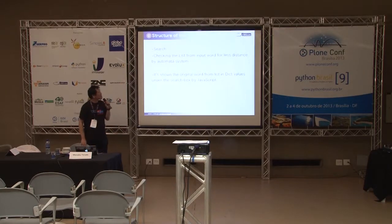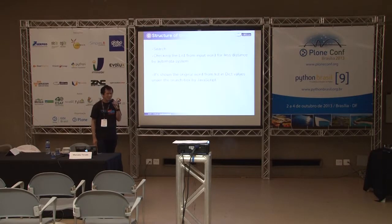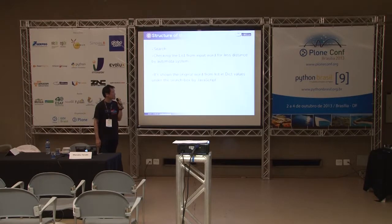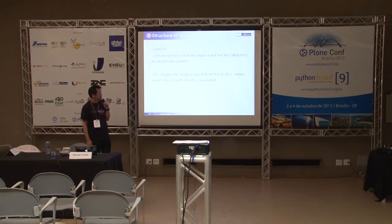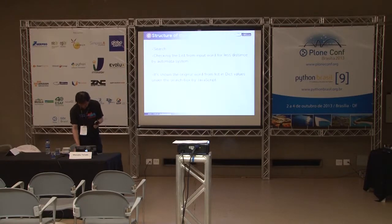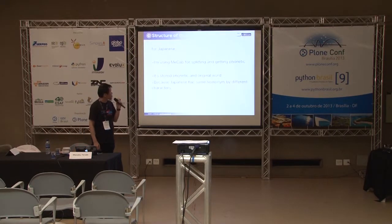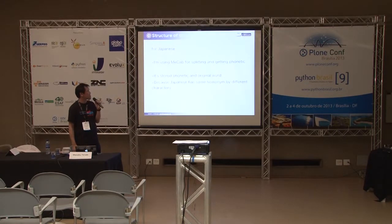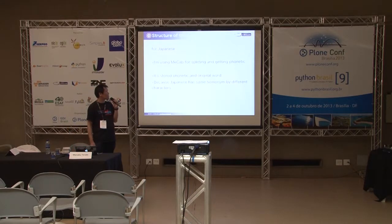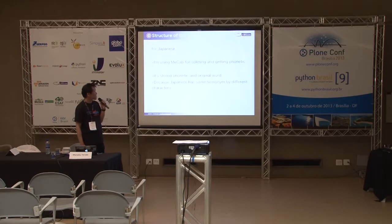For search: it checks the list from the input word for the least distance using the automata system. It shows the original word from the list in dict values in the search box via JavaScript. For Japanese, I'm using MeCab — splitting and getting phonetic form. It stores the sorted phonetic alongside the original word, because Japanese has the same homonym with different characters.